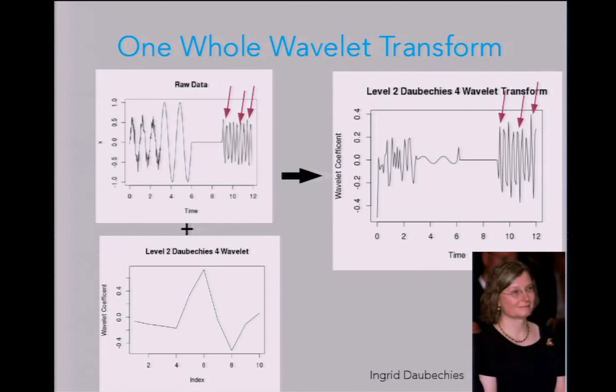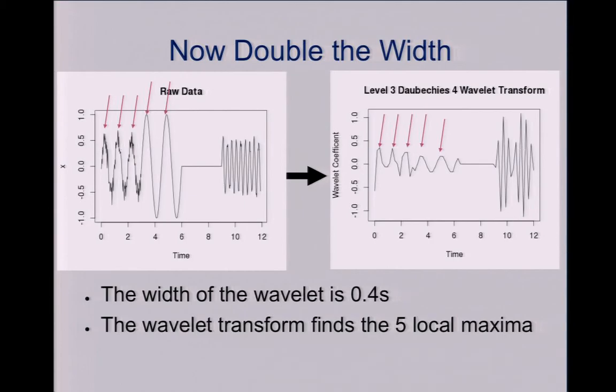So this one here is particularly designed to find maxima and minima. It finds peaks in your data. On this scale, it easily picks up the nine peaks over there and it matches up from the data. Here we double it, and now it finds the five peaks on the left very easily.